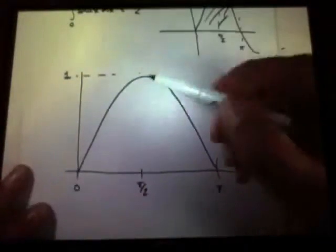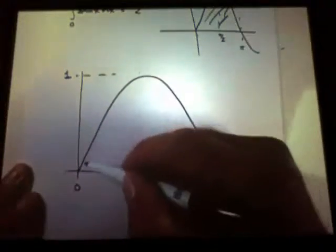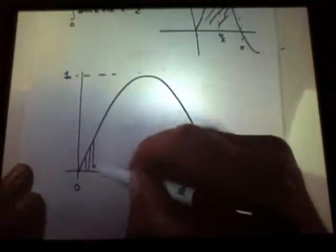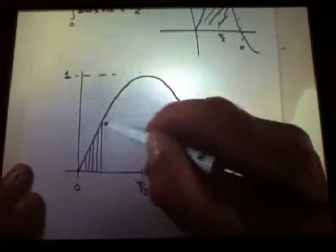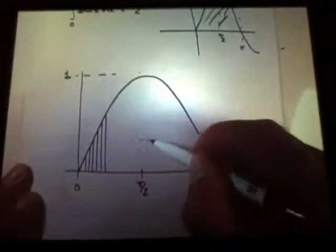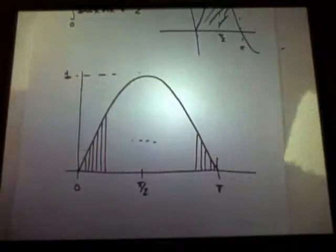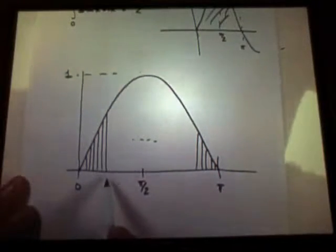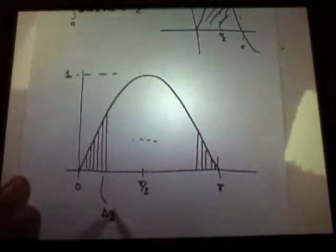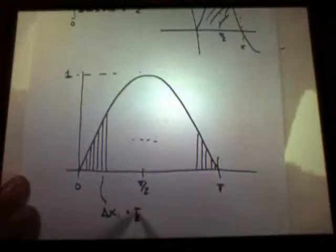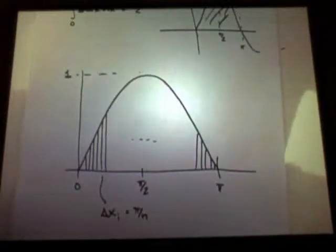If I chop this up into n subintervals, so my partition has intervals of size, if I chop it up into n pieces and it originally goes from 0 to π, this distance here is π over n, right?